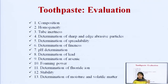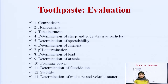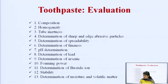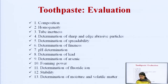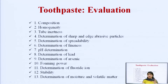We have discussed the definition, formulation ingredients, and preparation of toothpaste on small and large scale. Now the last part is evaluation — once toothpaste is prepared, it must be evaluated. Quality check is needed at the end. Parameters to control include: composition must be uniform, homogeneity must be maintained, tube inertness must be confirmed, sharpness and edge of abrasive particles must be determined, and the abrasiveness of particles used as abrasive agents needs to be determined using various tools.